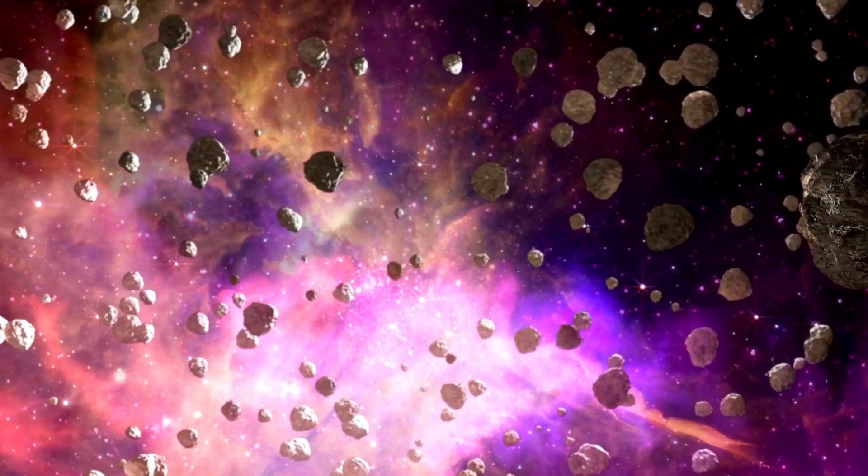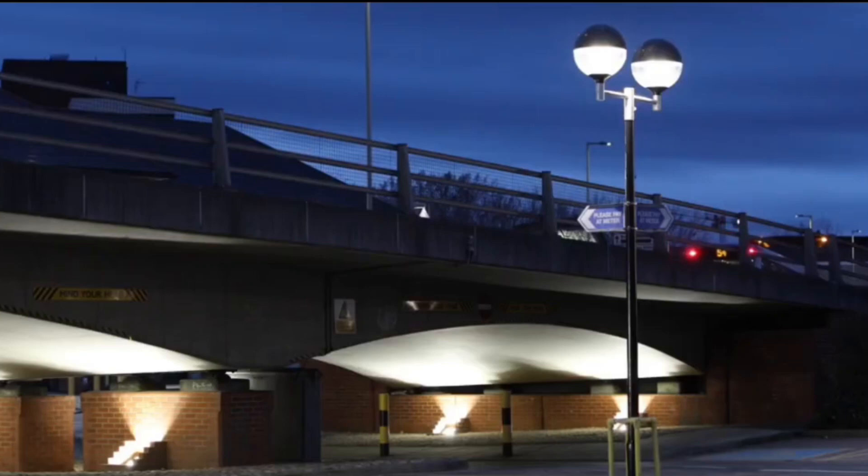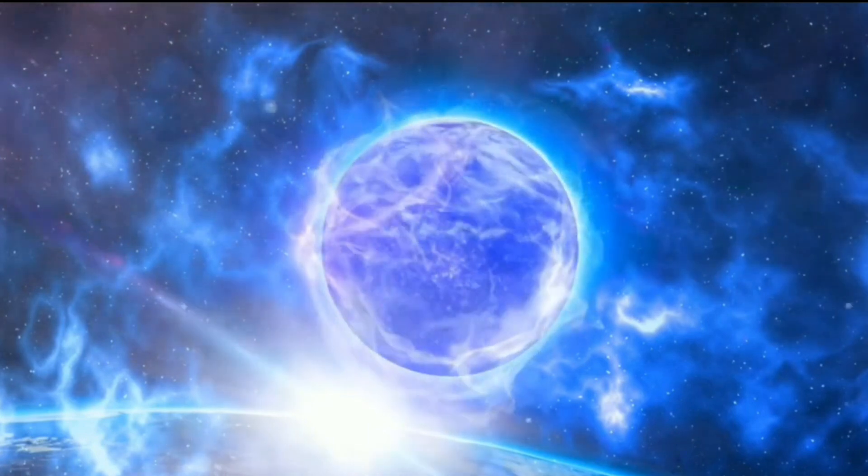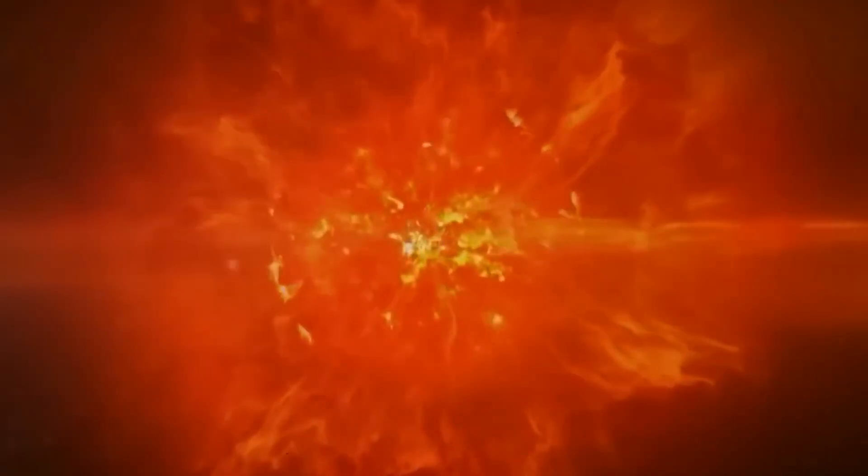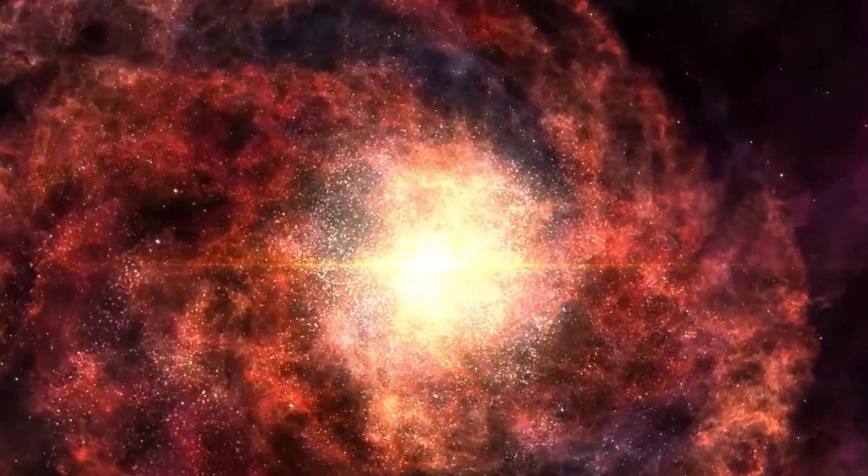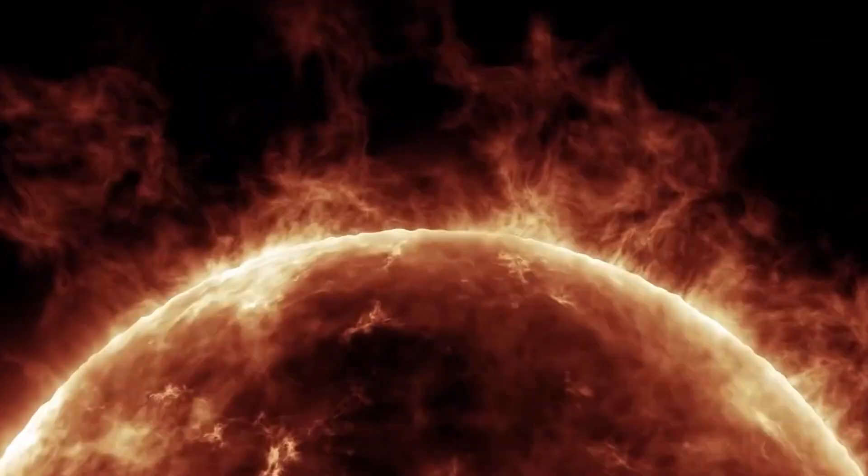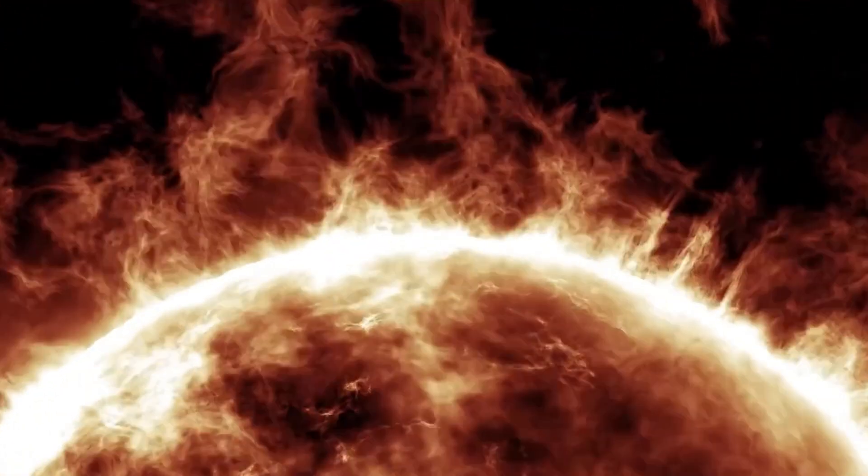Comparing Betelgeuse to other massive stars further highlights its uniqueness. While there are other red supergiants nearing the end of their life, such as VY Canis Majoris, their greater distance from Earth means that their eventual explosions would not be as visually spectacular as Betelgeuse's. Additionally, Betelgeuse's rapid evolution, due to its mass and proximity, makes it an ideal target for studying the late stages of stellar life. Understanding these processes can provide broader insights into how massive stars influence the interstellar medium, enrich the cosmos with heavy elements, and trigger the formation of new stars.